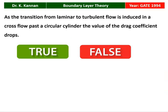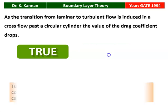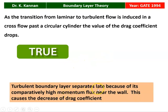Next question again from the 1994 question paper: As a transition from laminar to turbulent flow is induced in a cross flow past over a circular cylinder, the value of drag coefficient drops. The correct answer is false. The reason is that a turbulent boundary layer separates late because of its comparatively high momentum flux near the wall, which actually causes a decrease in the drag coefficient for flow over a circular cylinder.